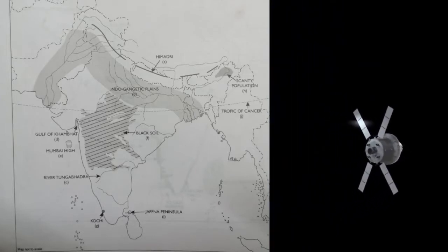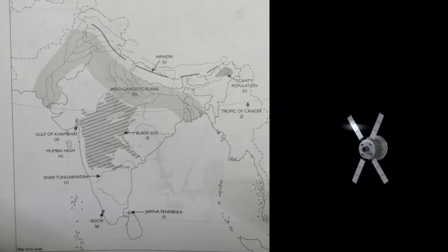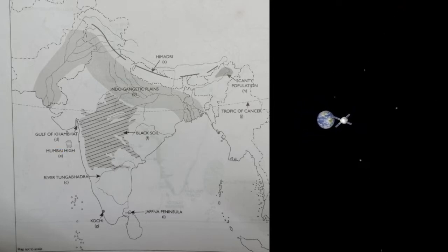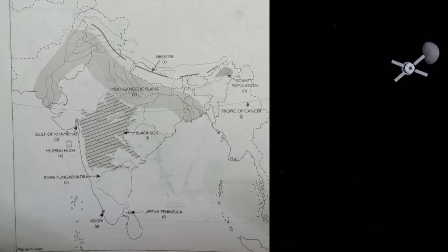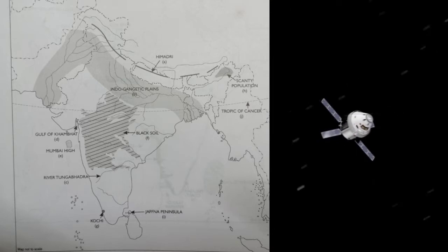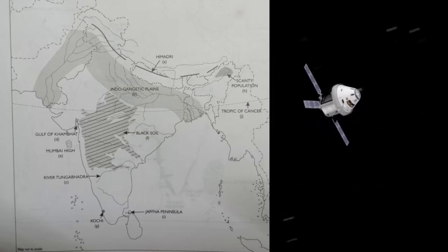Next, mark and name the largest offshore oil field. This is Mumbai High — very important. Also mark and shade one area of black soil — very important. Must mark and shade that black soil area.